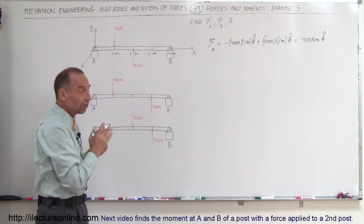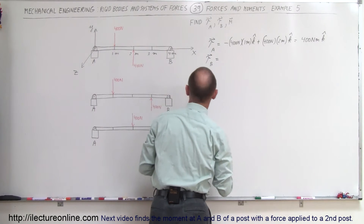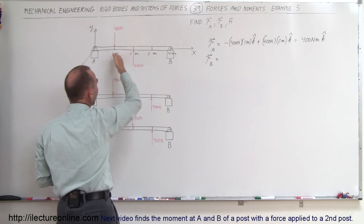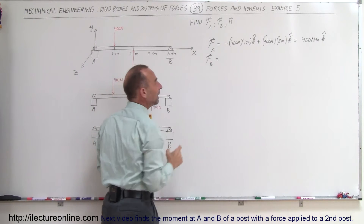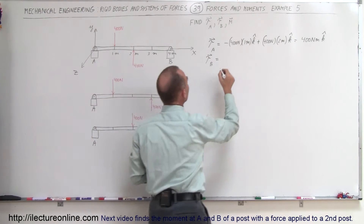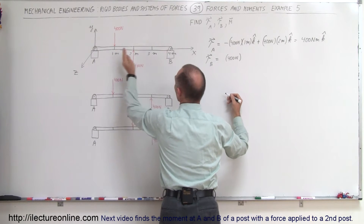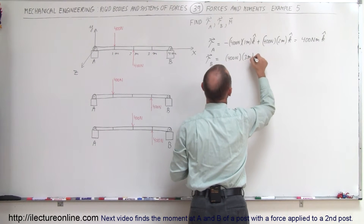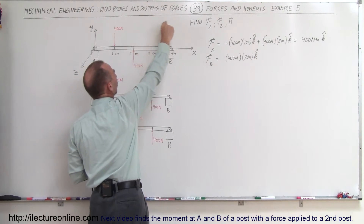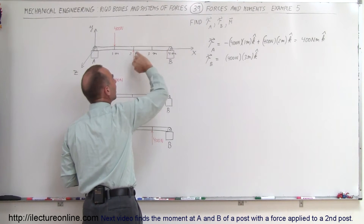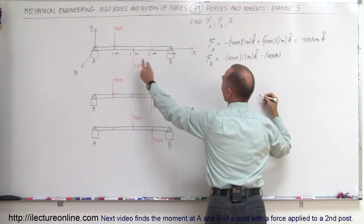Now let's find the torque of those same two forces relative to B. The torque relative to B is equal to — this force would cause a counterclockwise rotation about point B, so a positive torque. It would be plus 400 Newtons, and the distance from the line of action to the point of rotation is now three meters. The second force, the 400 Newtons, will cause a clockwise rotation about point B — that would be a negative torque — so it would be minus 400 Newtons times the distance of two meters.